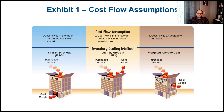The third cost flow is the weighted average, or average method. Using the $500, $600, $700 example, we add them together and divide by three to get an average cost. We call it weighted average because if we purchased different quantities at each price, we have to weight each cost by its quantity. We'll see the calculation for that shortly.